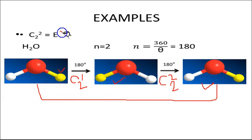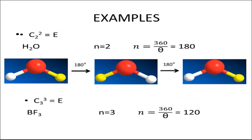Similarly you have to consider BF3 molecule, which also says that C3 of 3 equals E. n equals 3 because theta is 120 degrees for BF3.